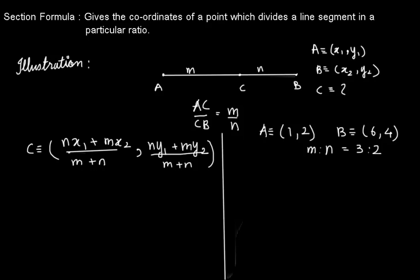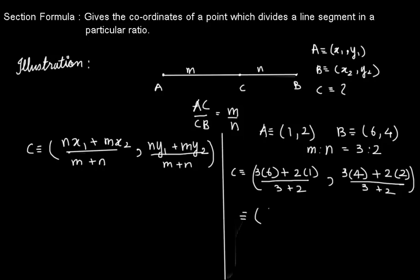So the coordinate of C will be ((3 × 6 + 2 × 1)/(3 + 2), (3 × 4 + 2 × 2)/(3 + 2)), which gives us (18 + 2)/5, and for the y-coordinate...